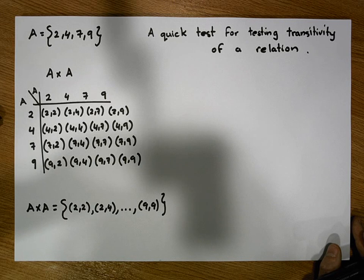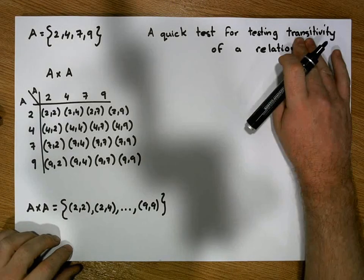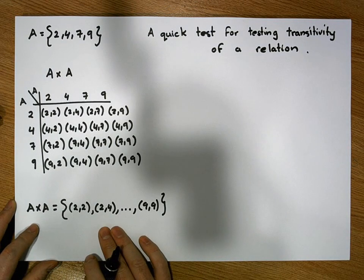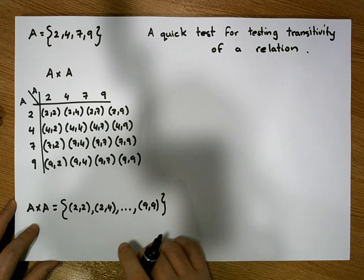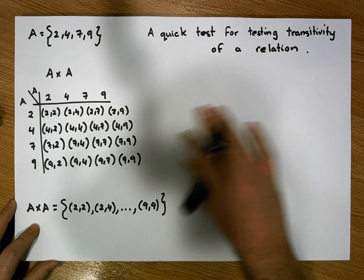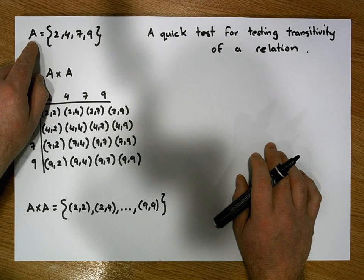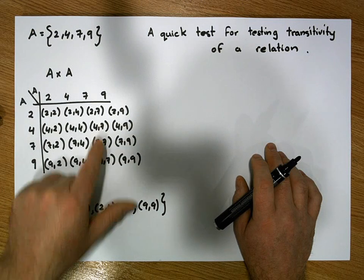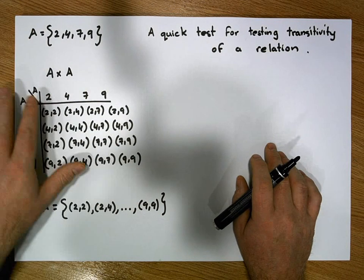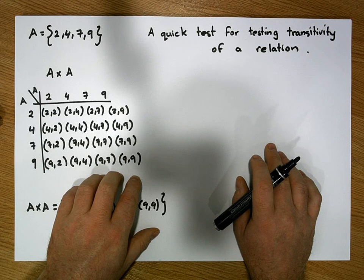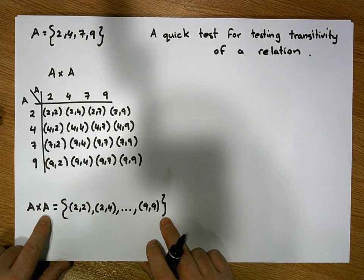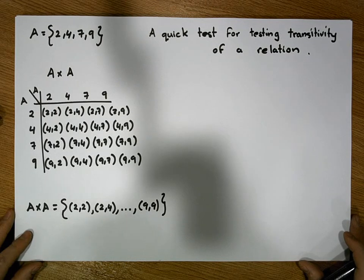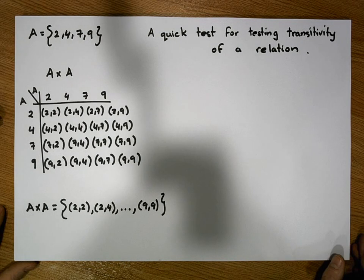There is a quick way that we could test for transitivity, and this short video is going to deal with that particular technique. The first thing to realize is that we're wanting to test a relation for transitivity. Like in all of our previous videos, we've defined a relation simply to be a subset of a cross product. The set we're going to be using is A = {2, 4, 7, 9}, and the relation is simply a subset of the cross product A × A.